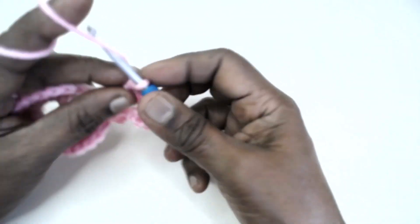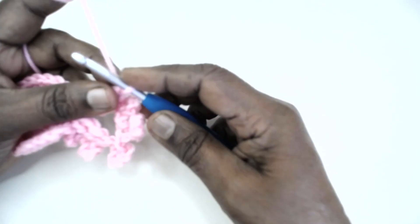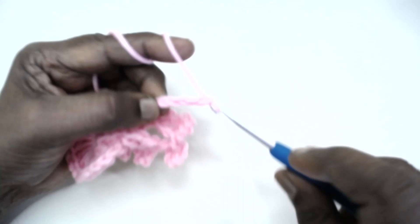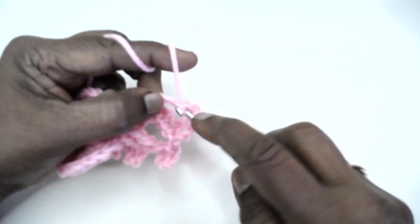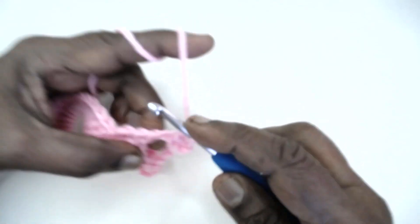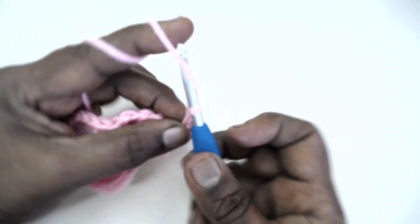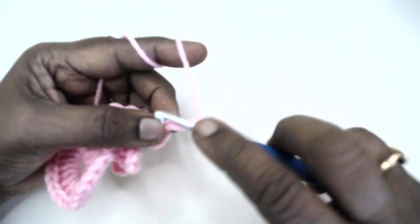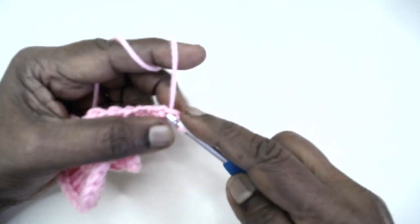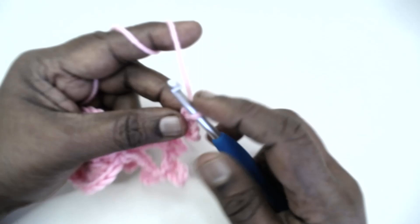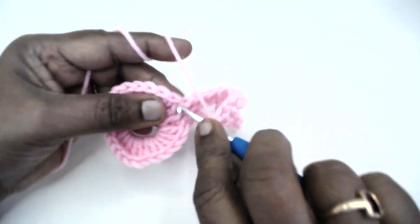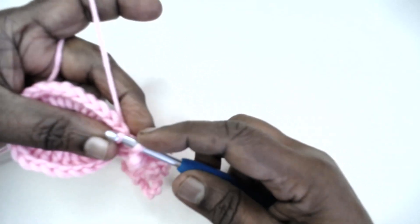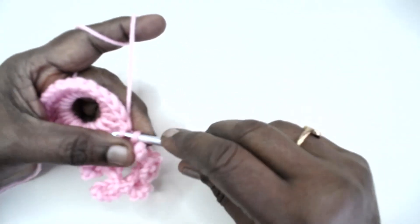Now chain 1 and make a large picot: one, two, three, four, five. Slip stitch to the first chain. Chain one and make a small picot. Now chain 1 and slip stitch to the same double crochet where we made our last two trebles.